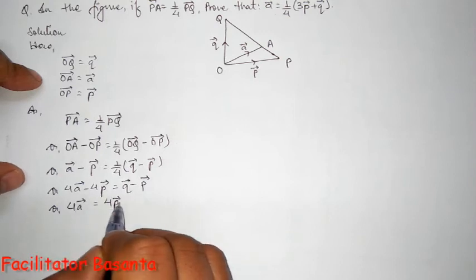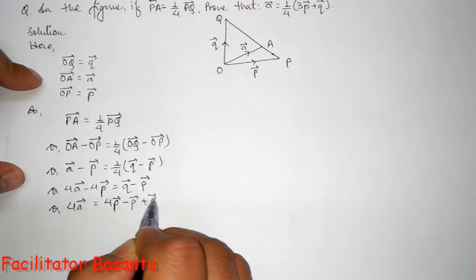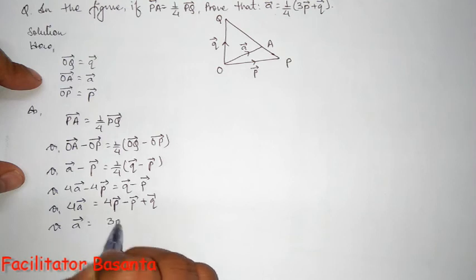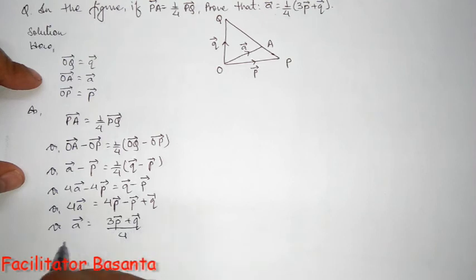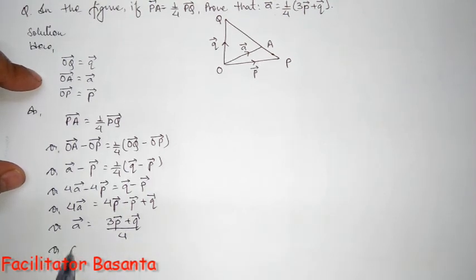p becomes positive four p vector minus p vector plus q vector. Or, a vector equals four p minus p is three p vector plus q vector whole divided by four. Or we'll write it as, a vector equals one-fourth of three p plus q vector.